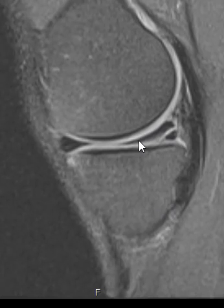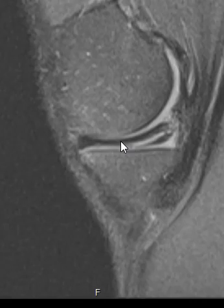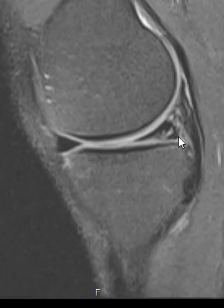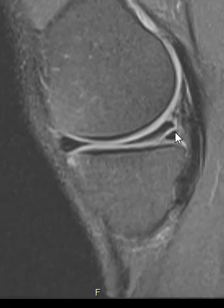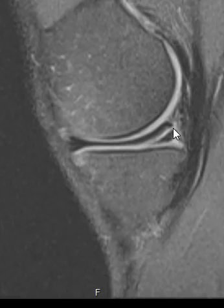Over here is the back of the medial meniscus, here's the front — this is called the anterior horn, this is called the body, this is called the posterior horn. So the posterior horn is in back, and we see this oblique undersurface tear. It contacts the back of it here — this is called the capsular surface — and it comes down to the meniscus undersurface.